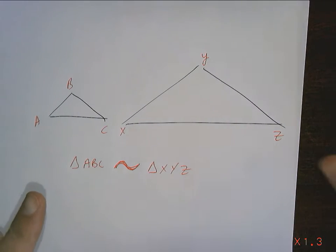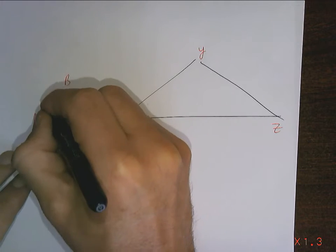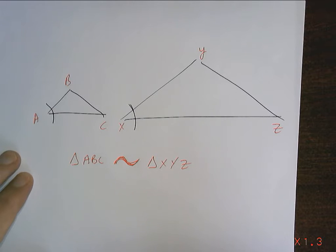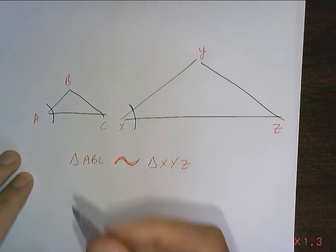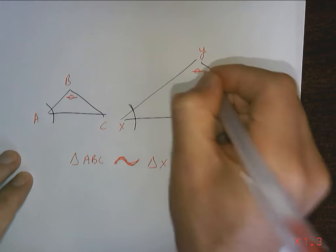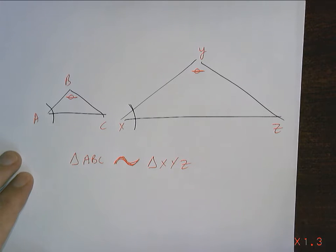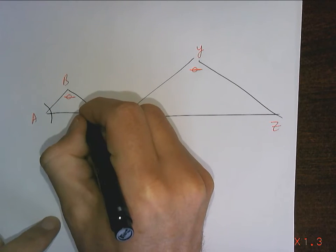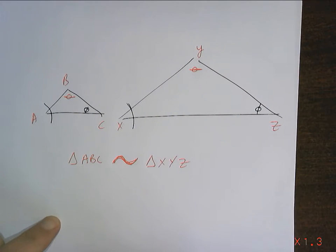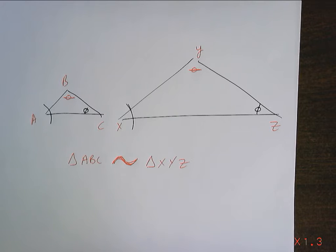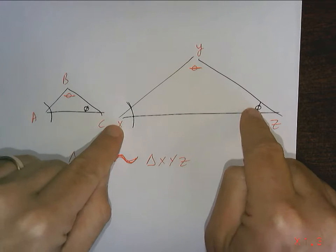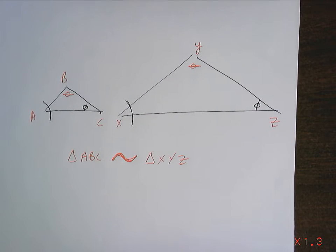If these two triangles are similar, that means angle A is going to equal angle X — the same angle measurement. Angle B will equal angle Y, and angle C will equal angle Z. That's one of the key things about similar triangles: their corresponding interior angles have the same measure.